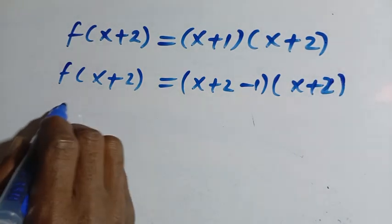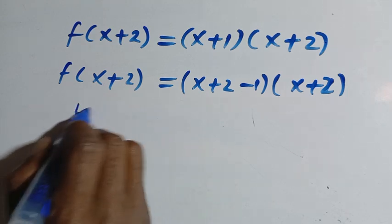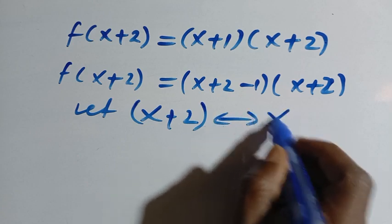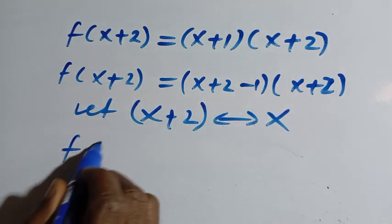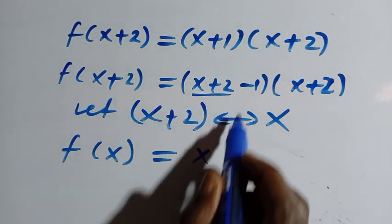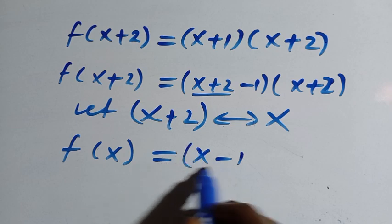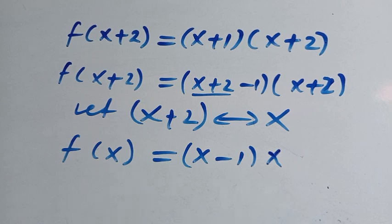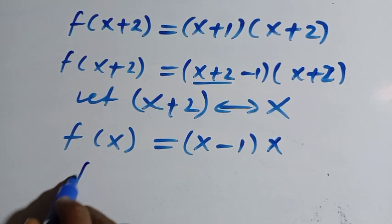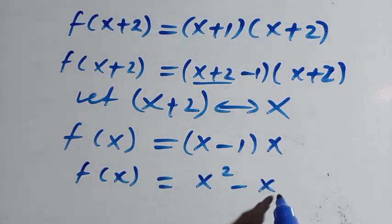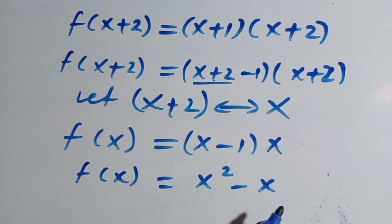So after having this, let's try to replace — suppose I let x plus 2 equal to x. So replacing x plus 2 with x, here we have f of x equals x minus 1 multiplied by x. Then we have f of x equals, when we multiply this out, we have x squared minus x. Our f of x is giving us x squared minus x.